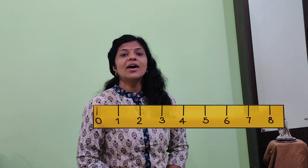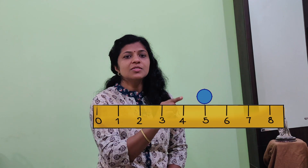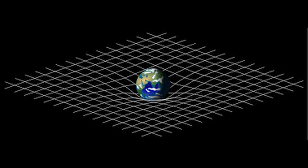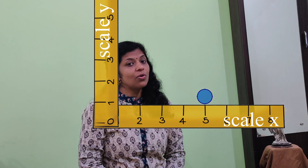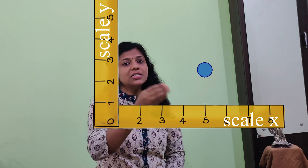If I give you a scale and ask you to describe the position of a point, you could say that this point is 5 cm to the right from the zero mark of the scale. Now, this line is one dimension. If we have an object in a plane, what we do is we use two scales. Let us call this scale X and this Y. Our point is 5 cm from the zero on the X scale and 3 cm from the zero on the Y scale. So this point can be represented by the pair of numbers 5 and 3.